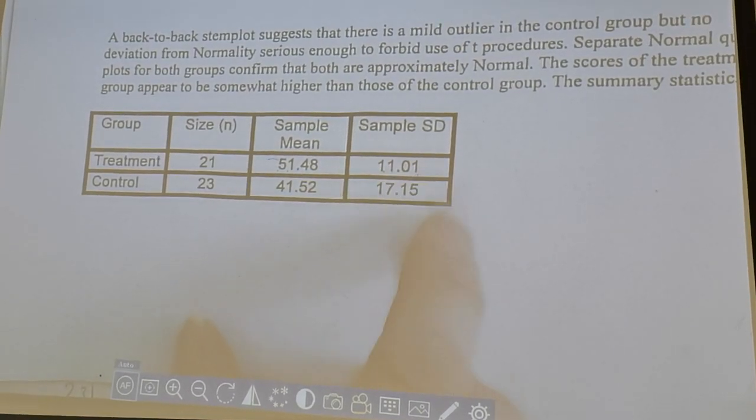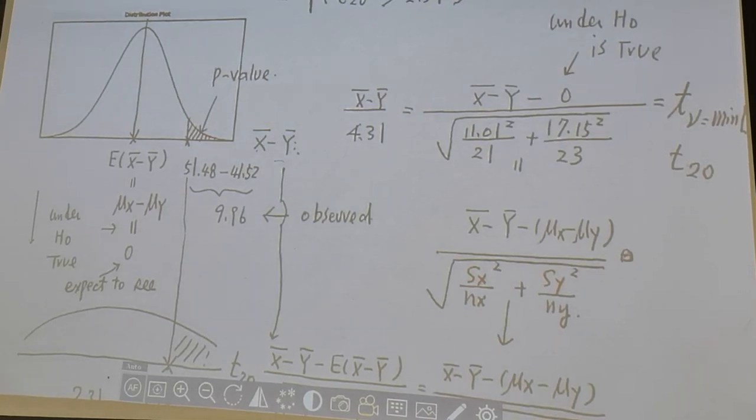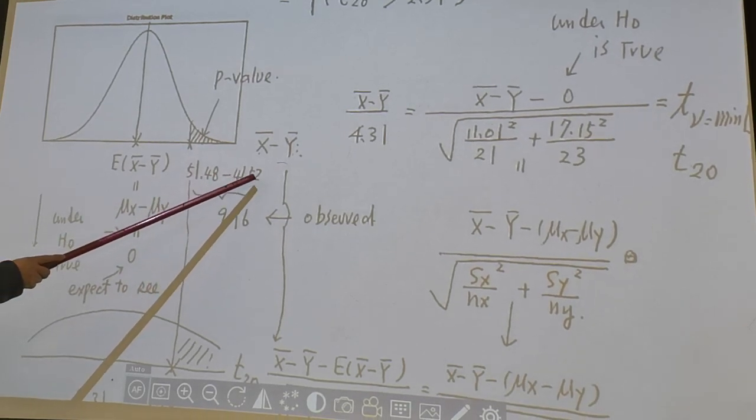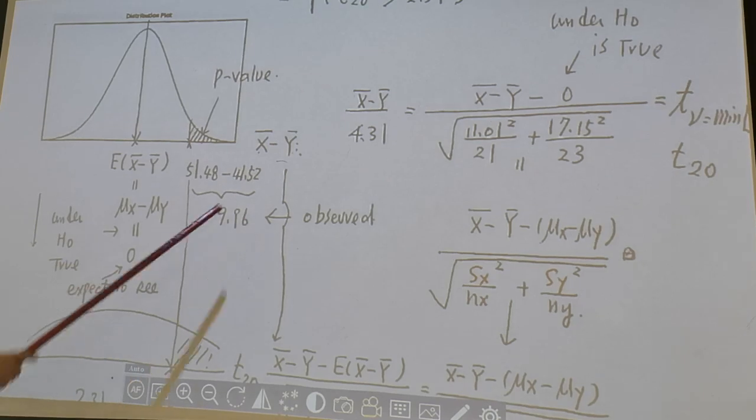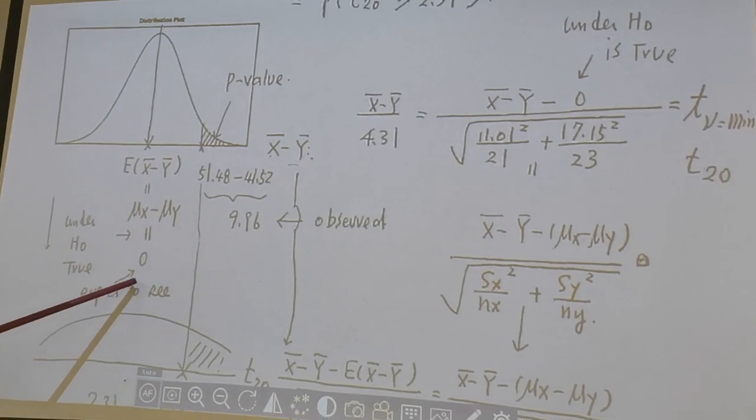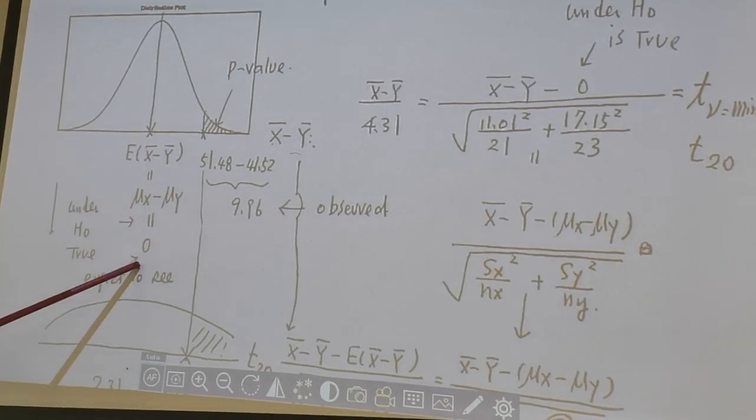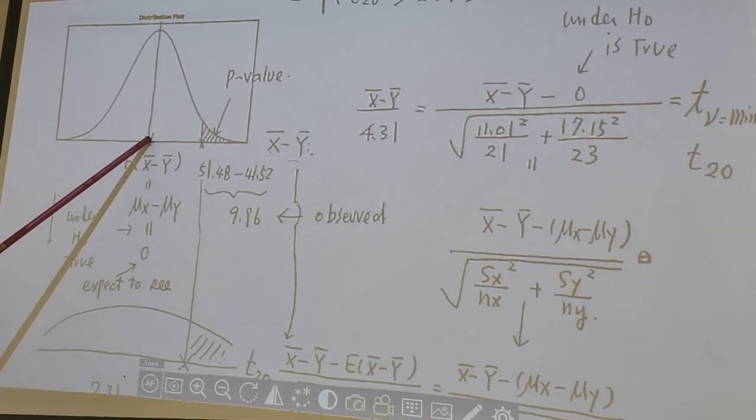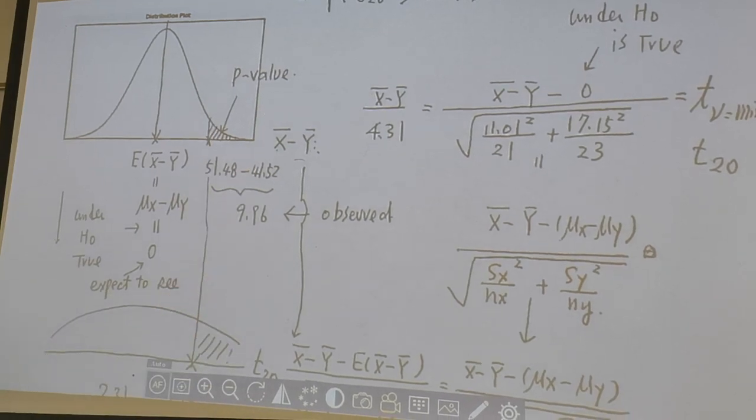And later on, we're going to use sx and sy as well. So, let's look at, observed x-bar is 51.48, observed y-bar is 41.52. And the difference is 9.96. And under H0 is true, what we observe should be close to what we expect. If under H0 is true, what we observe don't close to what we expect, further deviate from the expectation is called extreme.